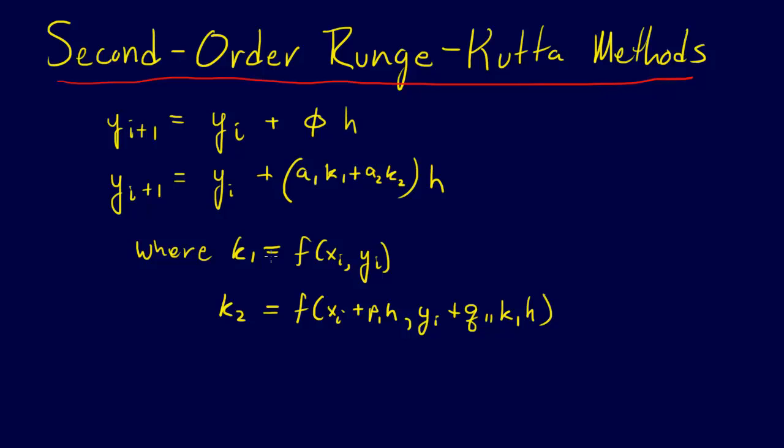But in order to do that, we just see this is the equation written out again—the regular Runge-Kutta equation. yi+1 equals yi plus phi h. yi+1 equals yi plus (a1k1 plus a2k2) times h. Just writing out what we showed you in the general framework for the Runge-Kutta method. And k1 equals f(xi, yi)—we're fine there.